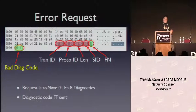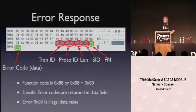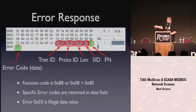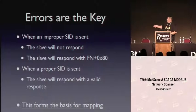What happens when we do something bad? We put in a valid function code but with a diagnostic code of 0xFF, which is not in the spec. What happens is you get your transaction ID, protocol ID, length, slave ID back - but if you look at the function code, it's 0x88, which had 0x80 added to it. That's really the key to how this all works: if you send a request with an invalid slave ID, it either errors or ignores you. But when the proper ID is sent, you get that function code back. Now we have a binary switch - if we meet the error conditions, wrong slave ID; if we meet this condition, correct slave ID. That's the fundamental basis for how to write device mapping.